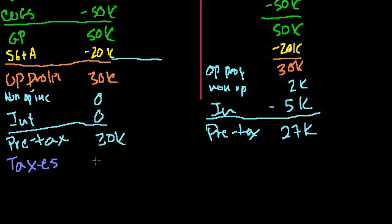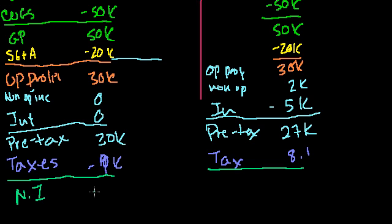They both pay 30% in taxes. So this guy is paying $9,000. And this guy, 30% of $27k is $8,100. And so we're finally at the net income line. This guy makes $21,000. This guy makes $18,900.